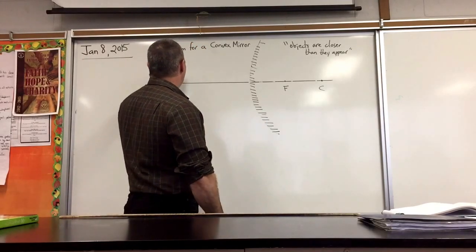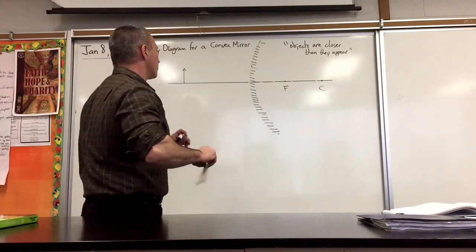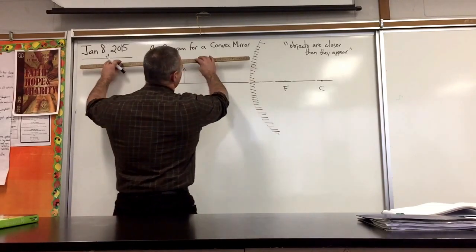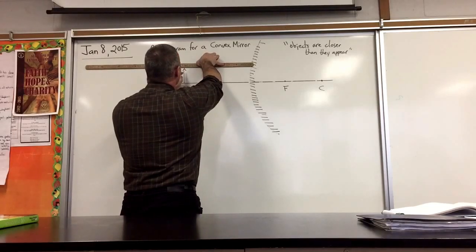As an object, we're going to use an arrow. We always draw two rays. The first ray will go straight to the mirror, parallel to the principal axis. We'll draw a straight line in.